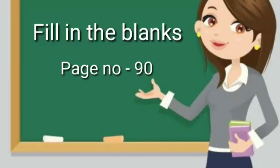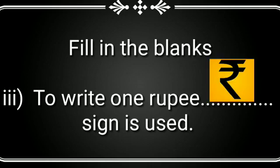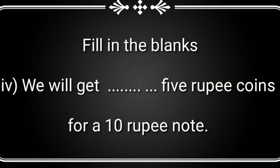Now we will solve fill in the blanks on page number 90. Our third fill up is: to write 1 rupee, which dash sign is used? The answer is this sign. Our fourth fill up is: we will get how many 5 rupee coins for a 10 rupee note? The answer is 2. We will get 2 five-rupee coins for a 10 rupee note.